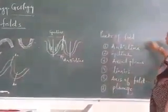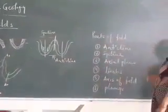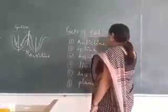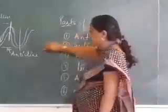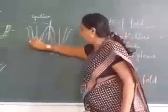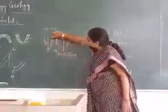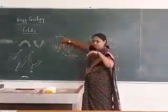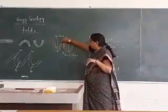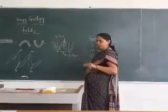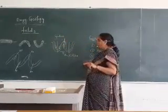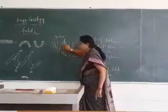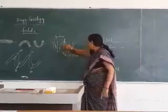There are 5 or 6 parts of folds. The first point is anticline — this is exactly anticline. In anticline, it is upward, in which the limbs are going away from each other and the youngest rock part is in the center part.